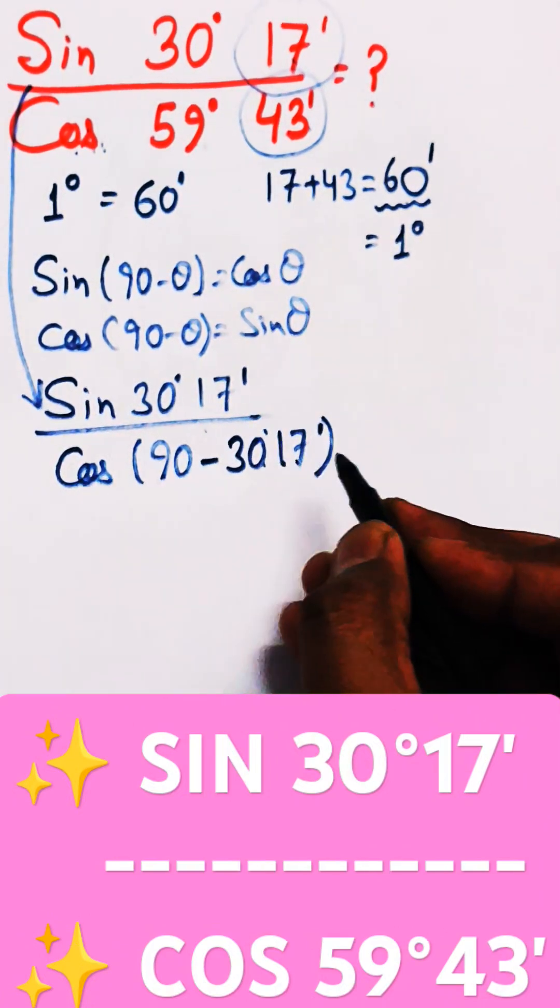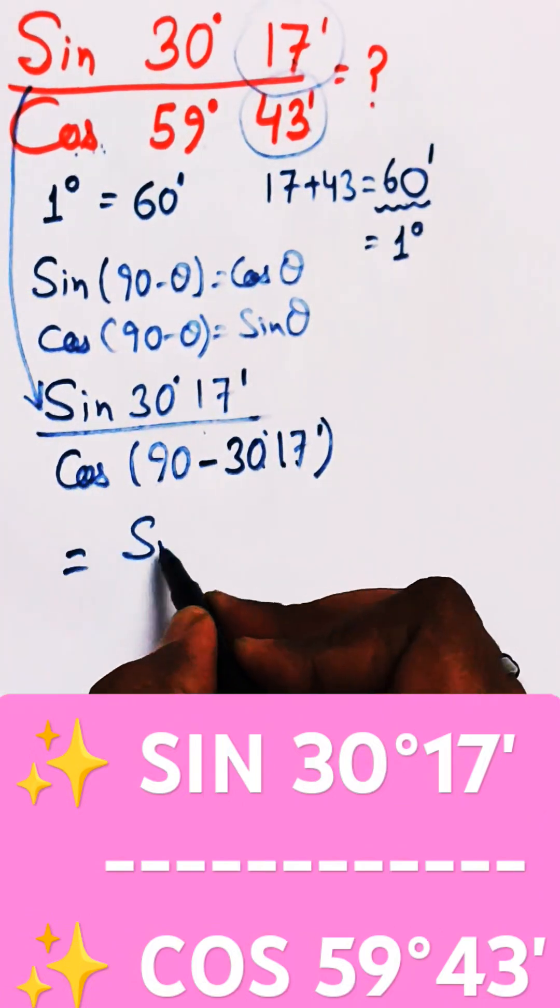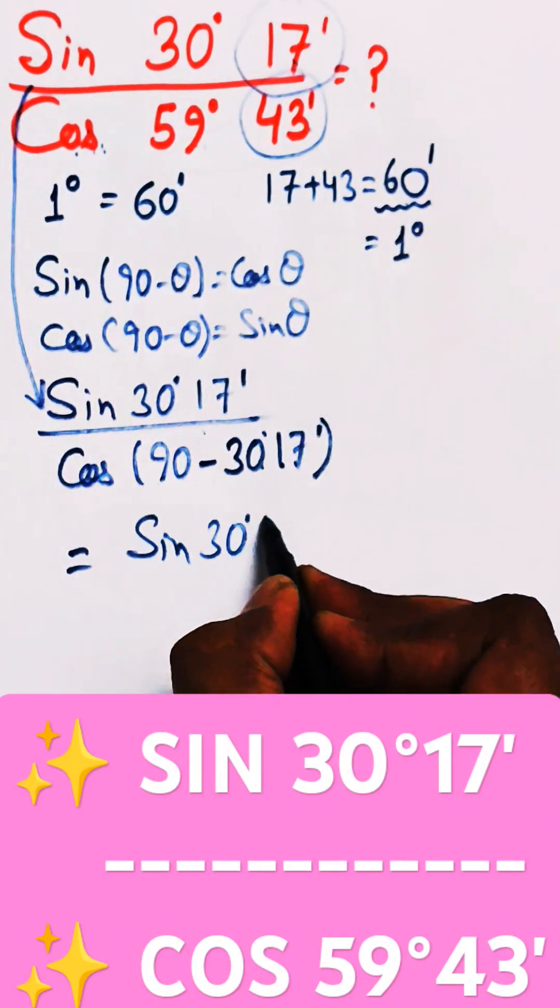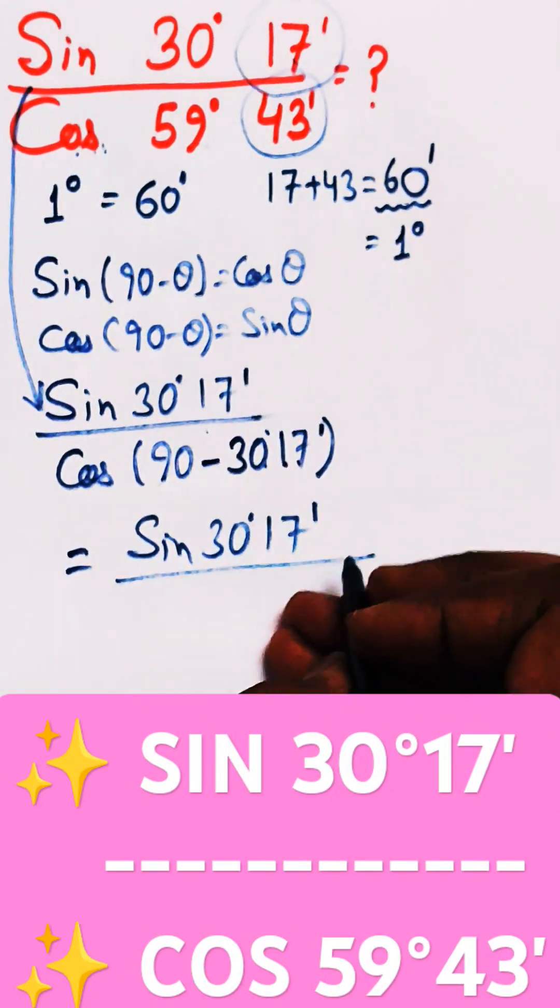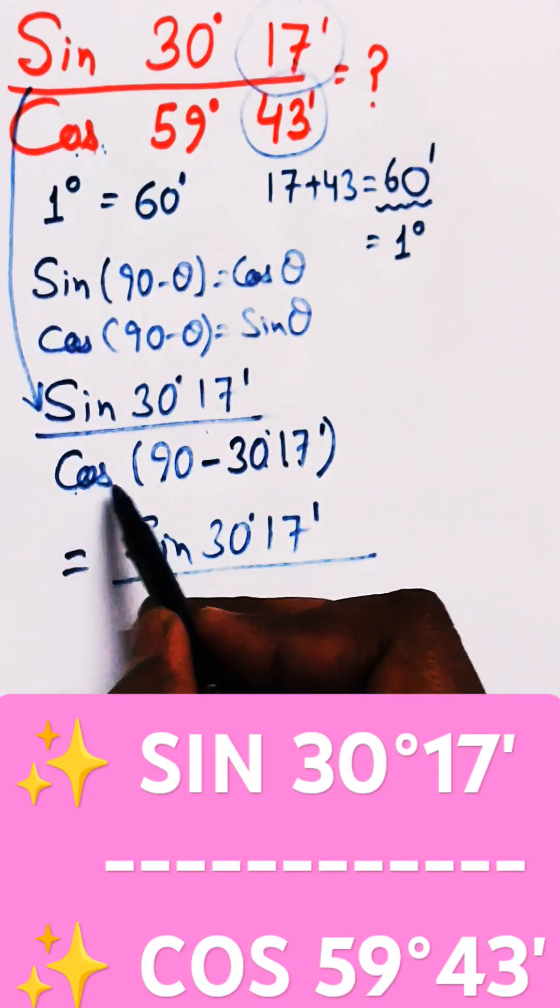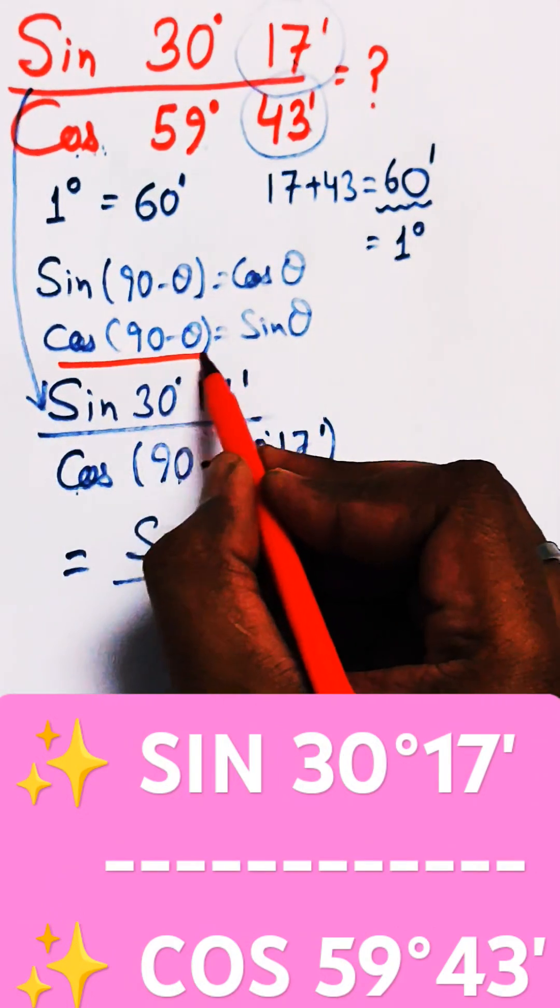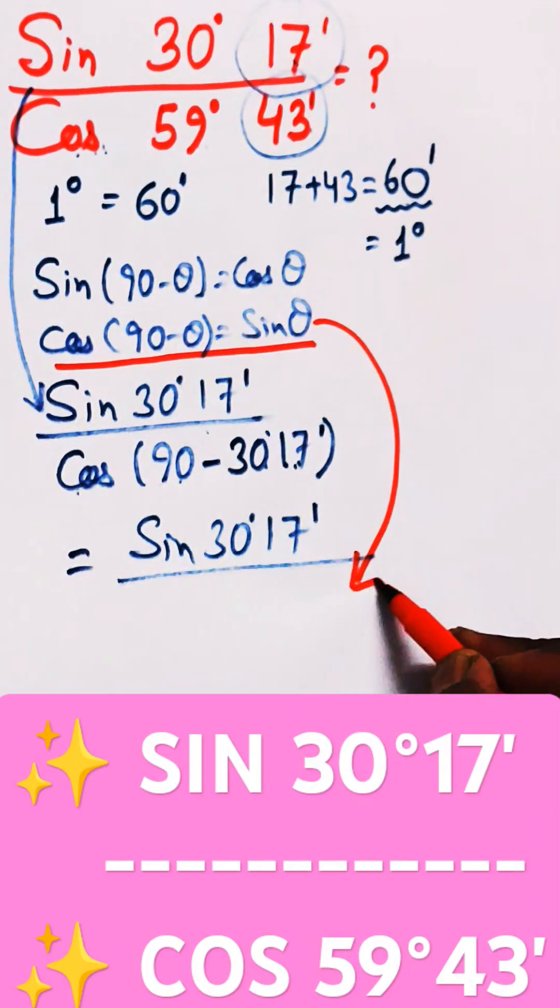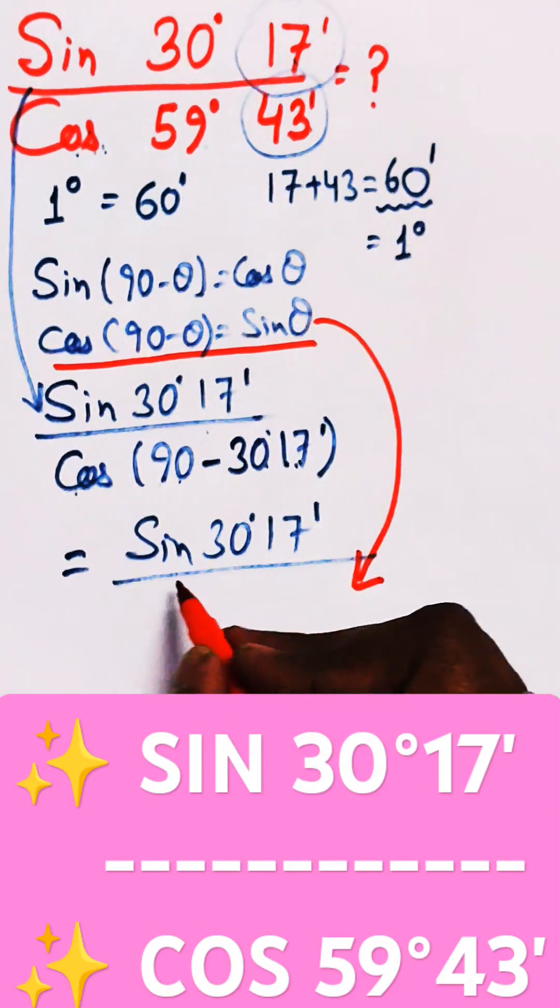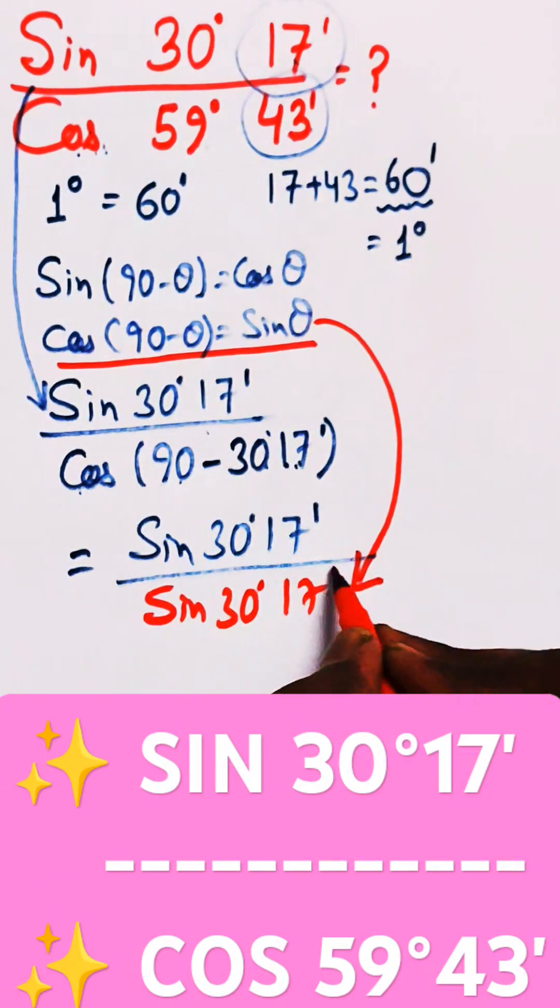In the next line, sin 30°17' will remain in the numerator. In the denominator, we apply the formula cos(90° - θ) = sin θ. Then our denominator becomes sin 30°17'.